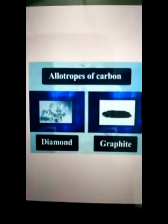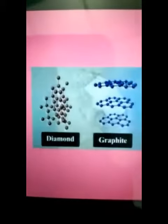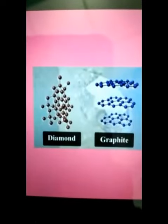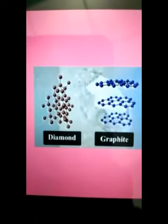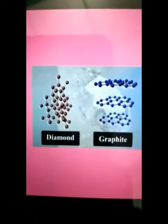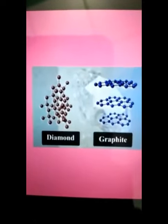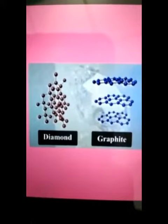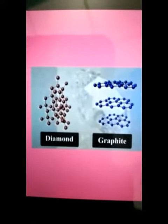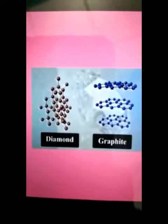Diamond and Graphite are the Allotropes of Carbon. Both are formed by Carbon atoms, but the difference lies in the manner in which the Carbon atoms are bonded to one another.